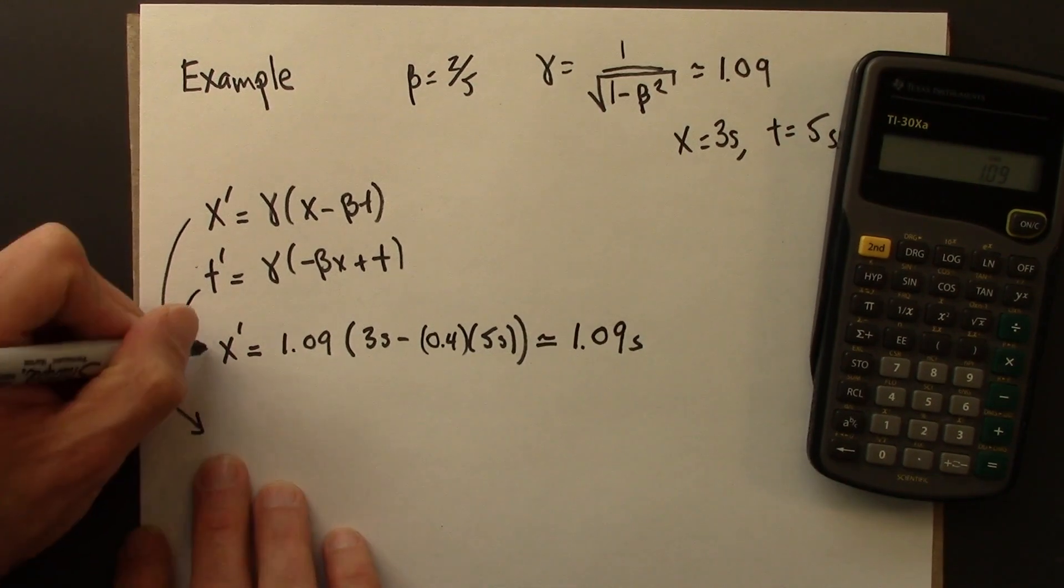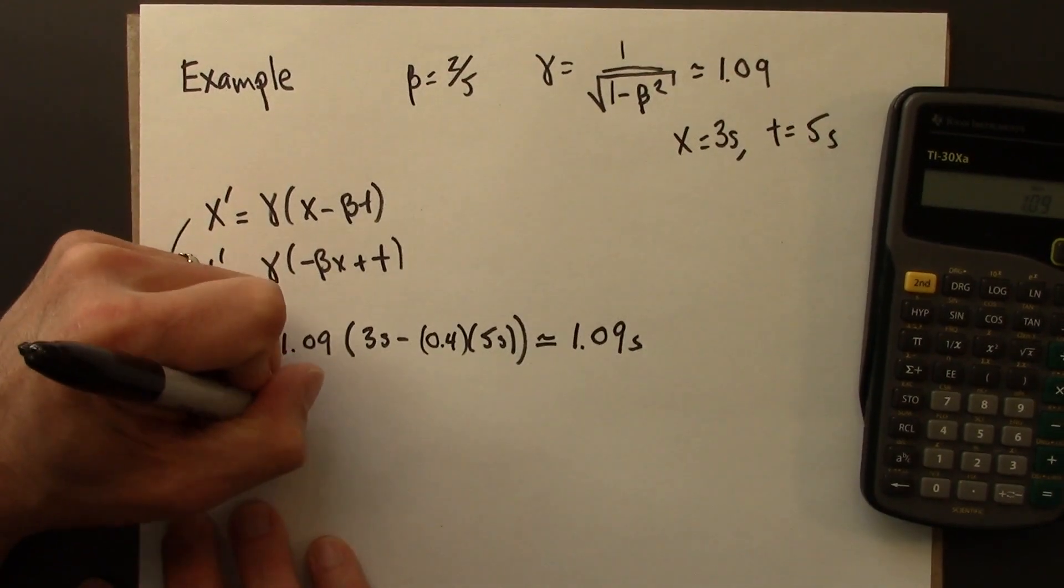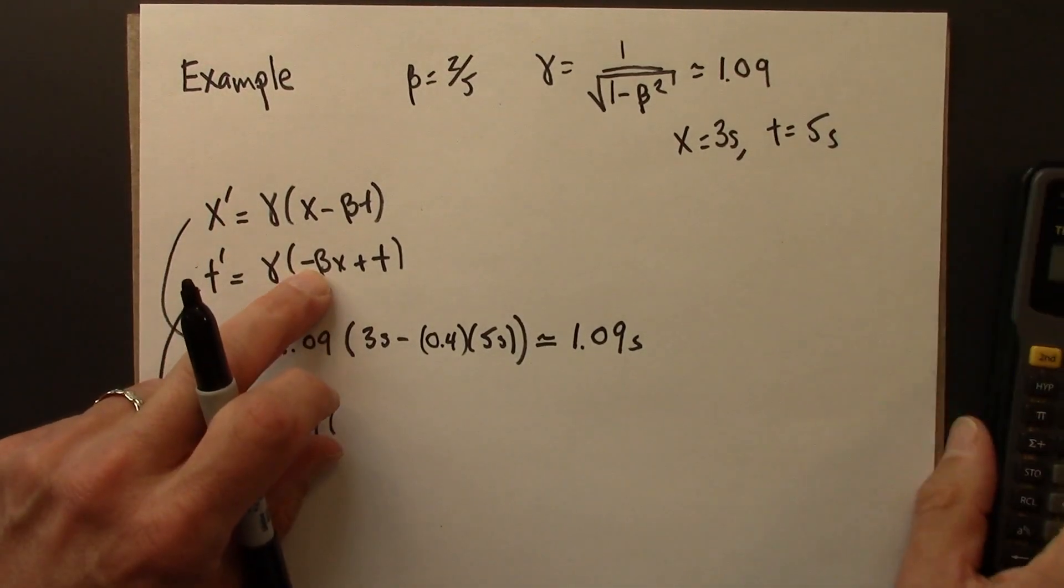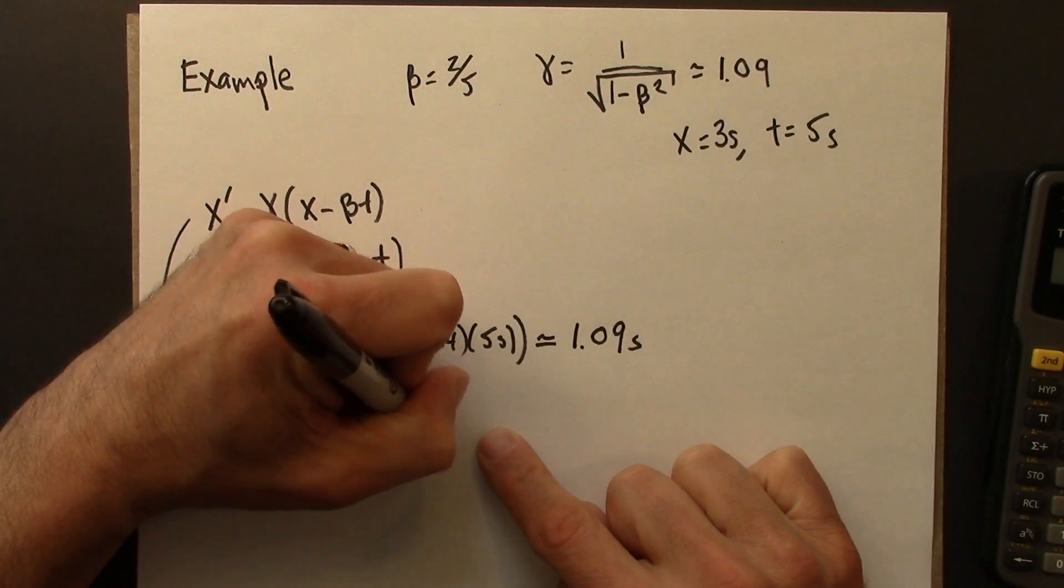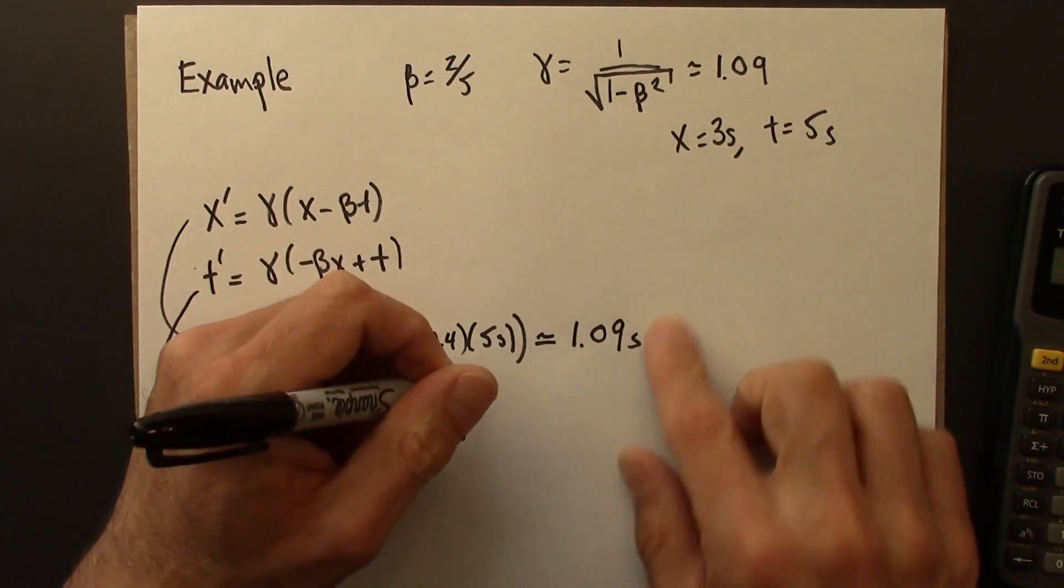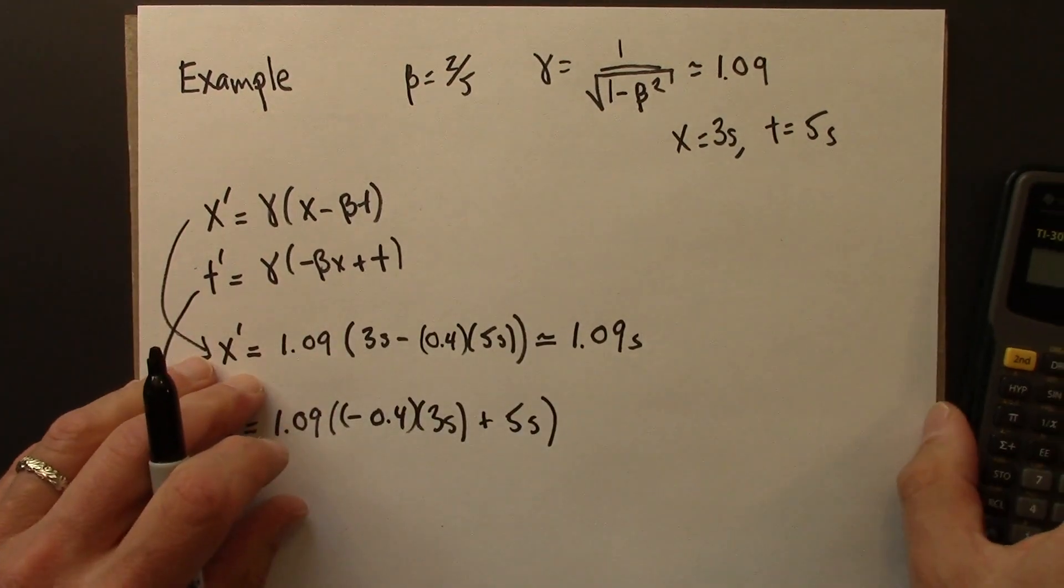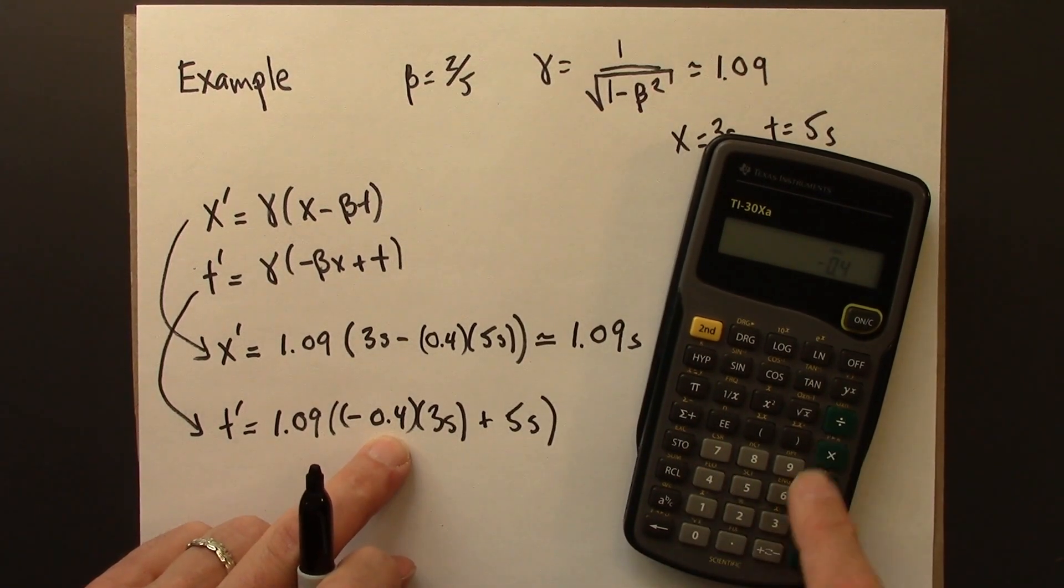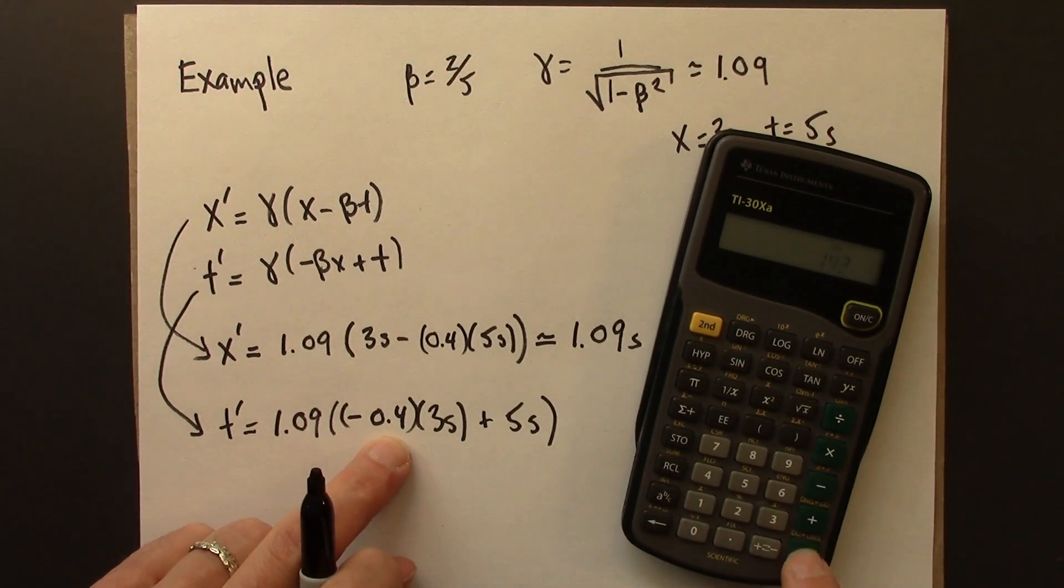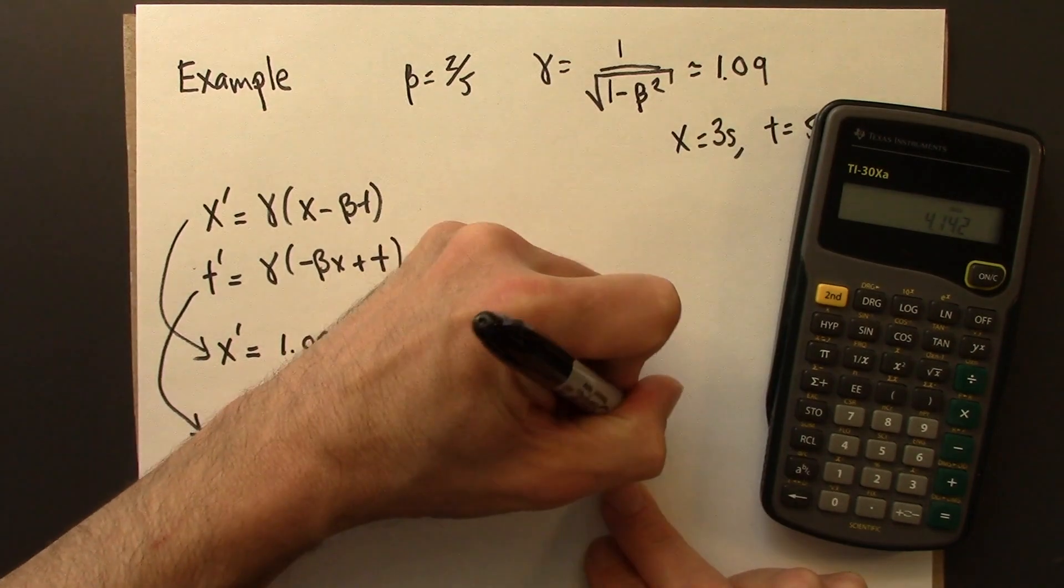Let's do t prime. Again, we just plug in. t prime is gamma, 1.09, minus beta x, minus 0.4 x, plus t. Let's see what the calculator tells me: 0.4 negative times 3, plus 5, times 1.09. And I get 4.1 seconds.